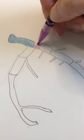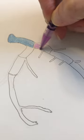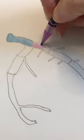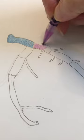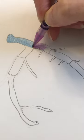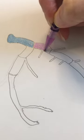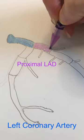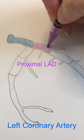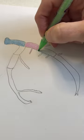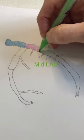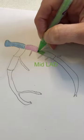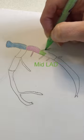Let's travel down the left anterior descending. It's anatomically broken into proximal, mid, and distal segments using the diagonals as landmarks. The proximal LAD is pictured here in purple. The mid LAD starts after the first diagonal and is shown here in green.